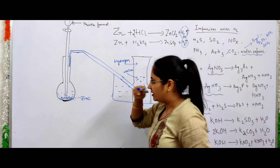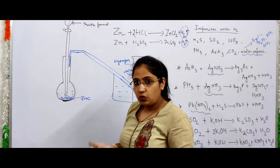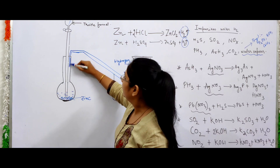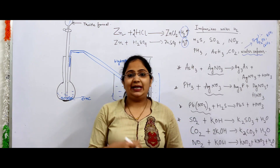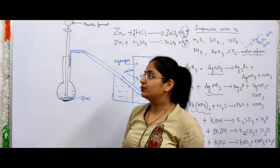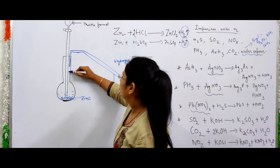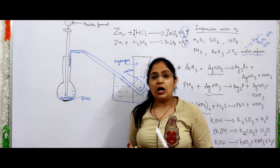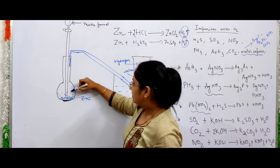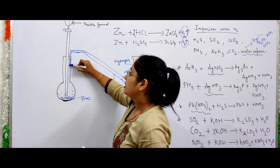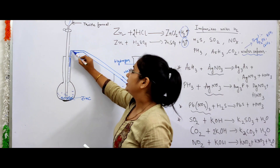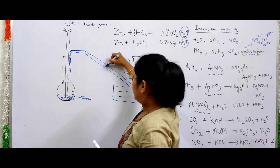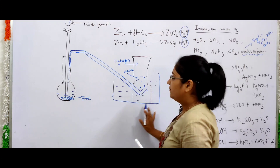This hydrogen gas travels upward and is collected through the delivery tube. We collect hydrogen gas by the method called downward displacement of water — that is, collection of hydrogen by displacing water downward.